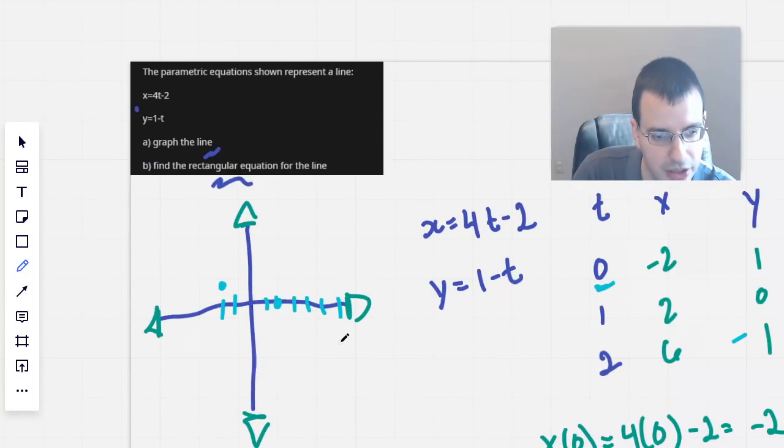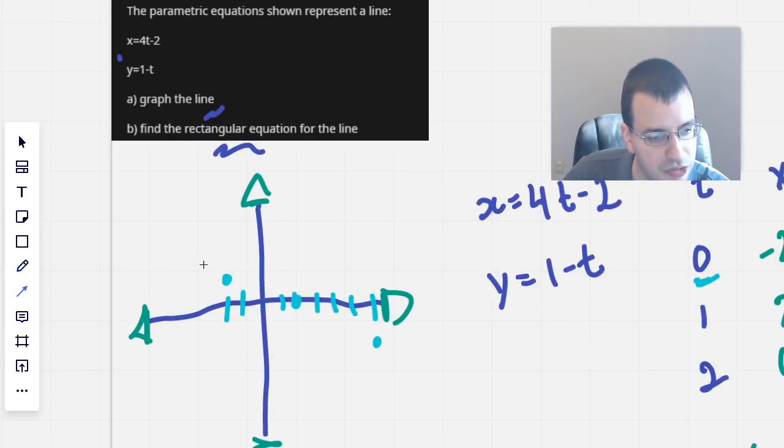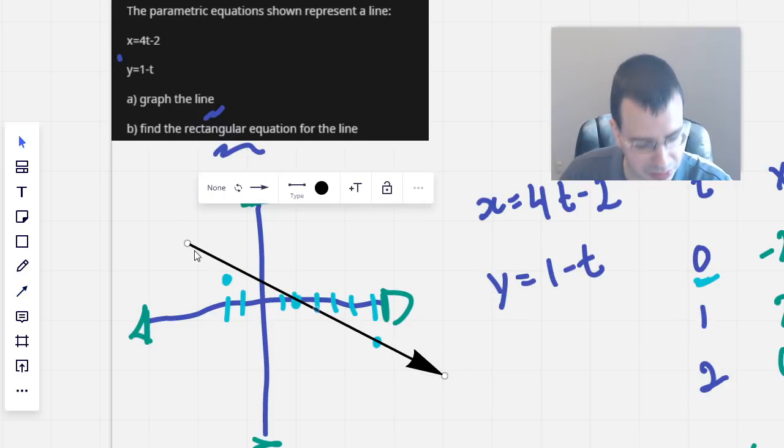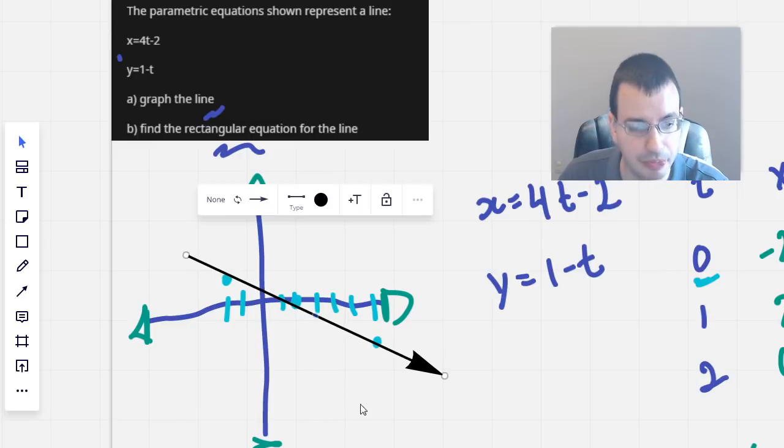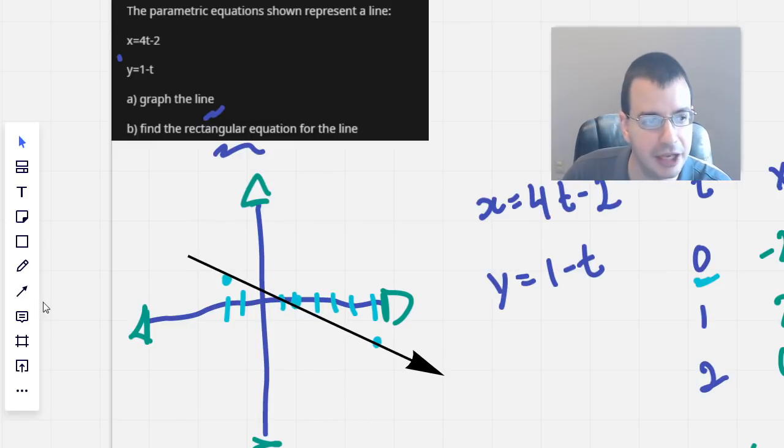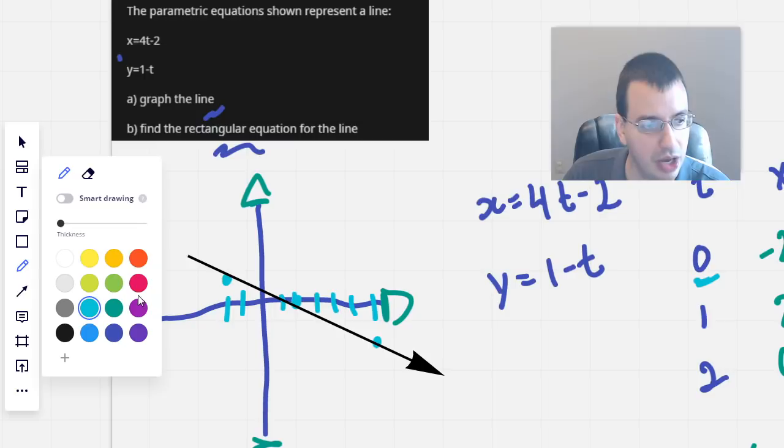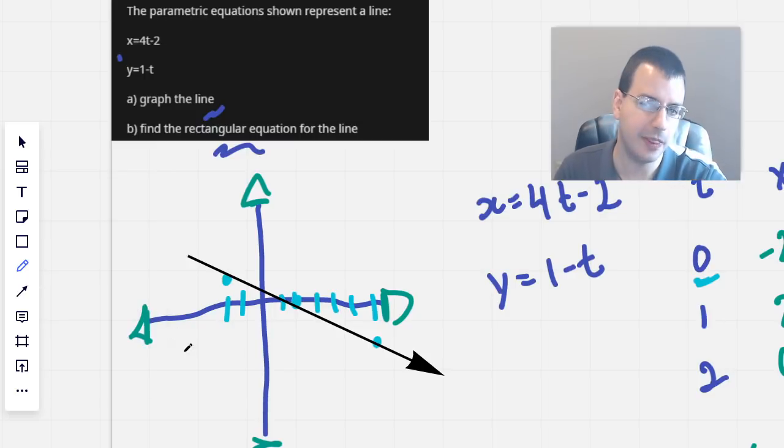So I draw a line that starts from the first point and goes through all three. My graphing is terrible, but the line will look kind of like that. When you're asked to graph the line, this is how I'd approach it. That's how I would graph it.